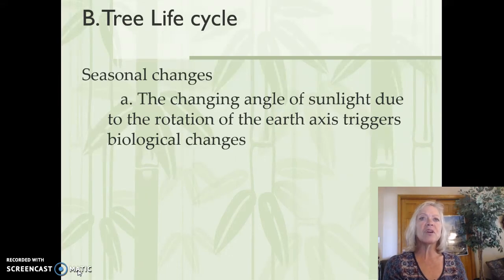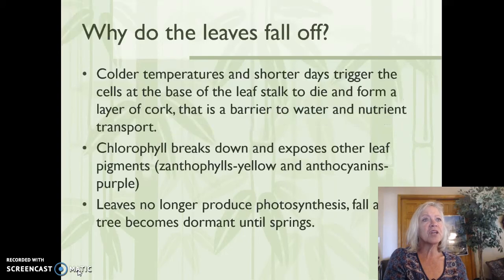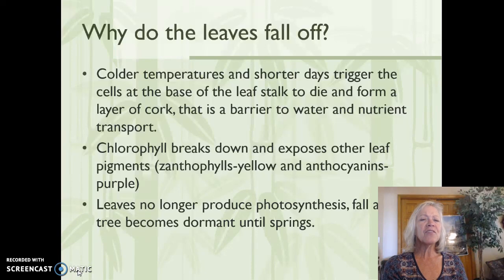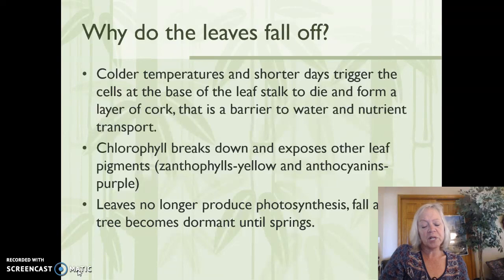There are also seasonal changes due to the angle of sunlight and the rotation of the Earth's axis, which trigger biological changes. Colder temperatures and shorter days trigger the cells at the base of the leaf stalk to die and form a layer of cork, which is a barrier to water and nutrient transport. The chlorophyll also breaks down and exposes other leaf pigments — xanthophylls are yellow and anthocyanins are purple — creating the change in leaf color. The leaves no longer produce photosynthesis, they fall, and the tree becomes dormant until spring.